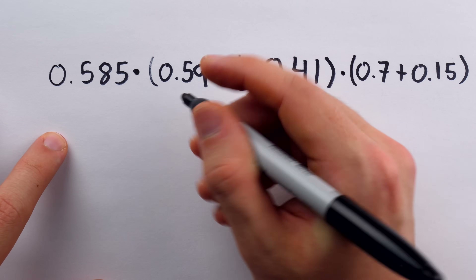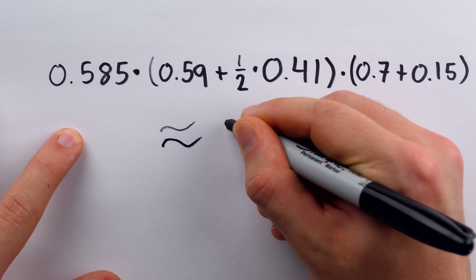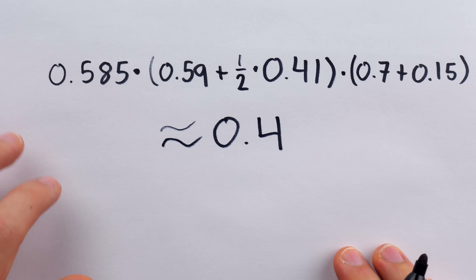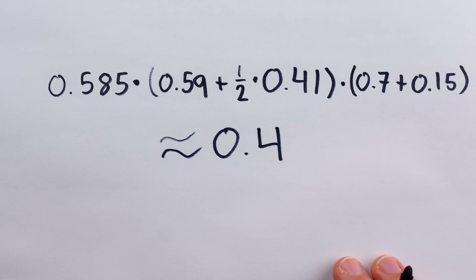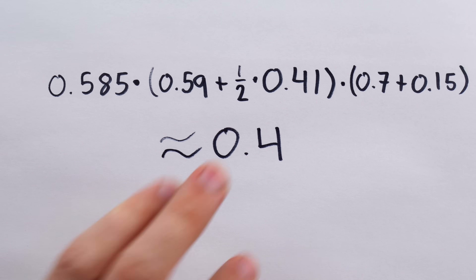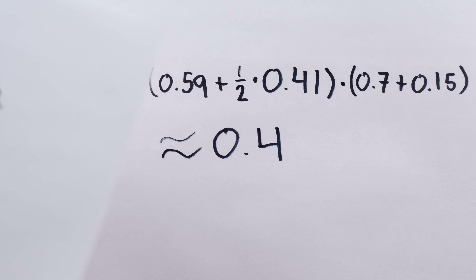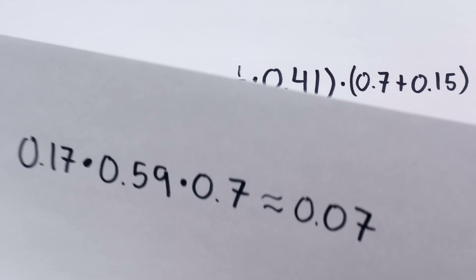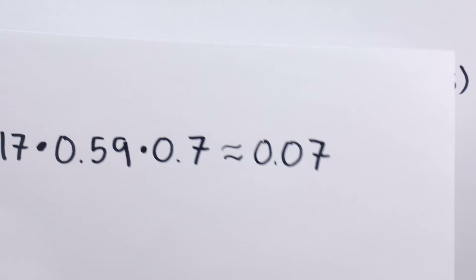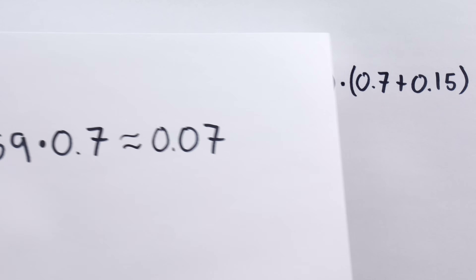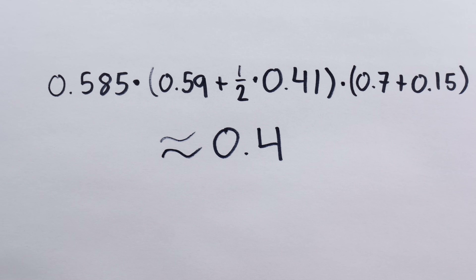Doing all this math, this comes out to about 40%, or a 0.4 probability that we answer all three questions correctly — which is certainly a more optimistic calculation than the professor's proposed solution, which gave us a meager 7% chance of getting all three questions correct.